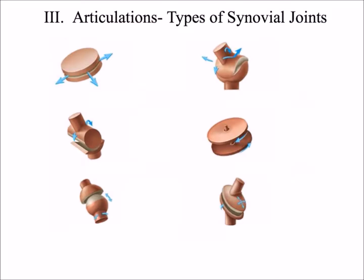There are six types of synovial joints. The first is the plane joint or gliding joint, where adjacent bones have flat surfaces that articulate with one another. Examples of plane joints are the carpal bones of the wrist and the tarsal bones of the ankle.